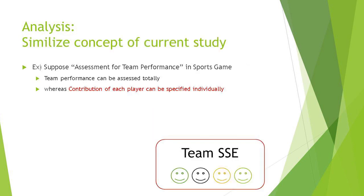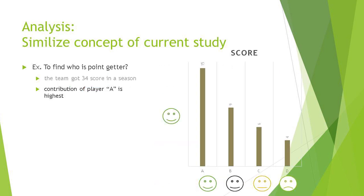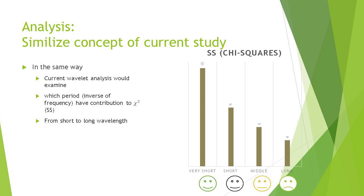The concept of current study analysis. Suppose assessment for team performance in sports game. Team performance can be assessed totally, whereas contribution of each player can be specified individually. To find who is the point getter. So the team got 34 score in the season. Contribution of player A is highest. In the same way, current wavelet analysis will examine which period. Period is inverse of frequency. Periods have contribution to chi-square statistics from short to long wavelengths.